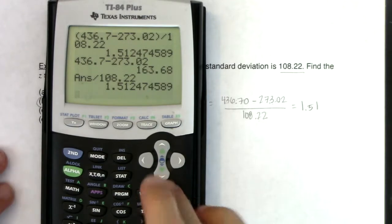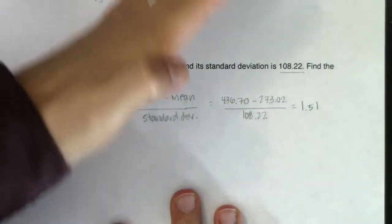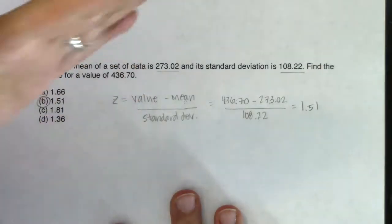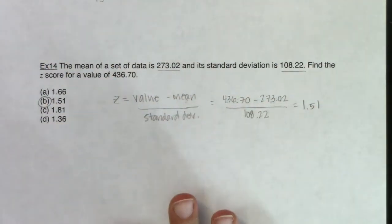All right, so what we're going to do next is we're going to go back through all of our previous examples and fill out the socks for all of them, because now we can do shape, outlier, center, spread. So I'm going to go back through all of the examples throughout this chapter and show you what their socks were. All right, so let's do it.